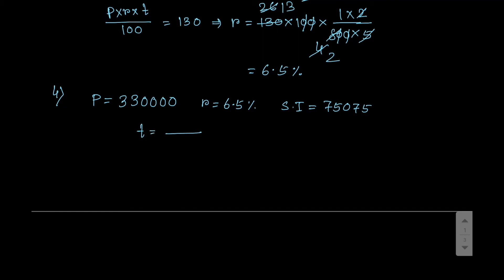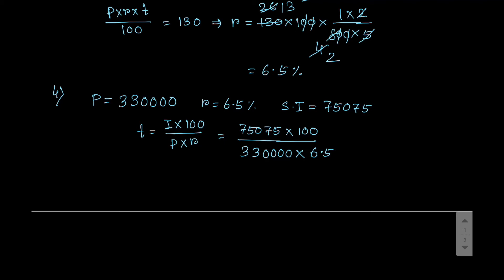Using the formula P times R times T divided by 100 equals SI, rearranging gives T equals I into 100 divided by P into R. So 75,075 into 100 divided by 3,30,000 into 6.5. The three zeros cancel out. 75075 divided by 65 gives 1155, and 1155 divided by 330 equals 3.5. So the answer is 3.5 years.